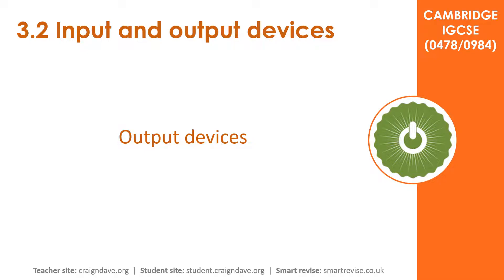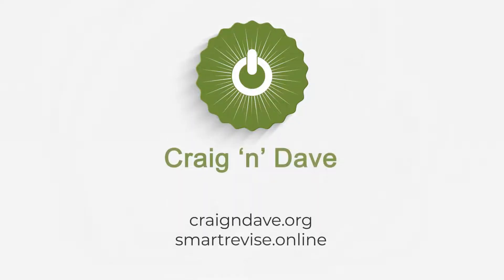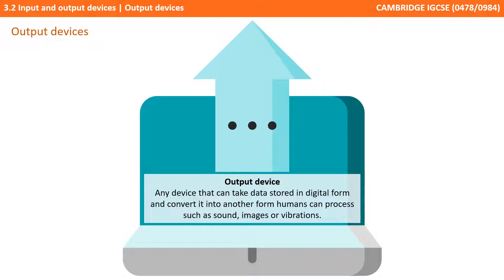In this video we'll be taking a look at output devices. An output device is any device that can take data stored in a digital form and convert it into another form humans can process, such as sound, images or vibration feedback.